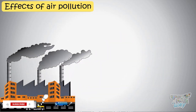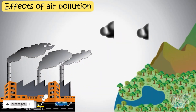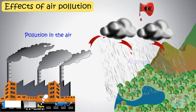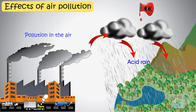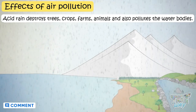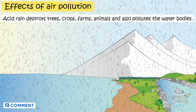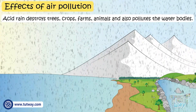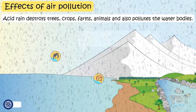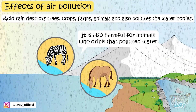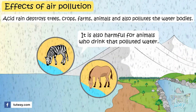Chemical pollutants in the air, when mixed with rain, form acid rain, which is very harmful for all living beings. Acid rain destroys trees, crops, farms, and animals, and also pollutes water bodies, which again harms the living things that depend on the water of that water body.